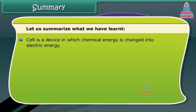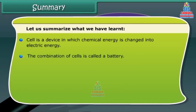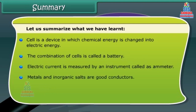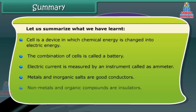Cells are sources of electric current. A cell is a device in which chemical energy is changed into electric energy. The combination of cells is called a battery. Electric current is measured by an instrument called an ammeter. Metals and inorganic salts are good conductors, while non-metals and organic compounds are insulators.